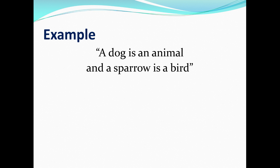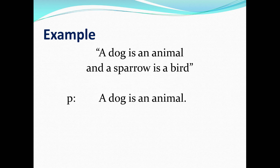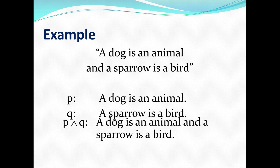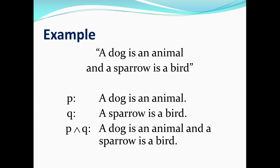Let's look at an example. Here we have the statement: a dog is an animal and a sparrow is a bird. We can combine these statements with the "and" symbol by letting P be the statement "a dog is an animal" and Q be the statement "a sparrow is a bird." So symbolically, P and Q means a dog is an animal and a sparrow is a bird. Now we want to generate a truth table for conjunctions, looking at different combinations — negating either P, Q, or both, to see if the outcome is true or false.